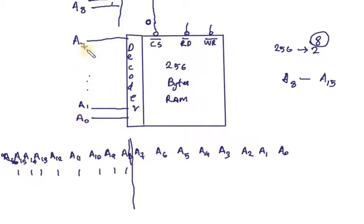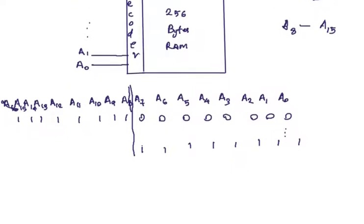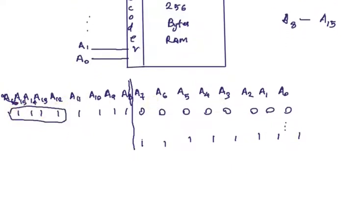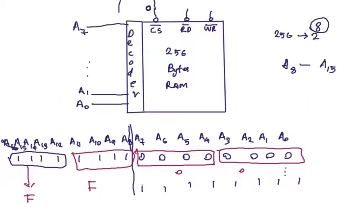A0 to A7 variable values — the minimum value is 0, 0, 0 and the maximum value is all 1s: 1, 1, 1, 1, 1, 1, 1, 1. This maximum value gives F, and this is also F. The lower bytes are 0 and 0.